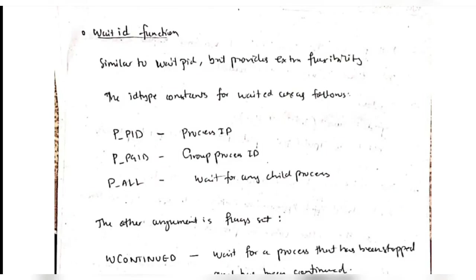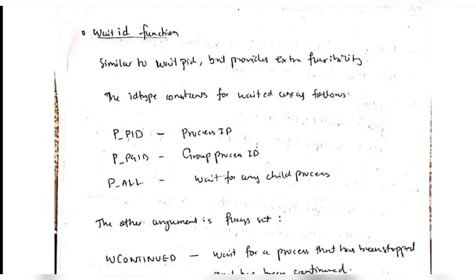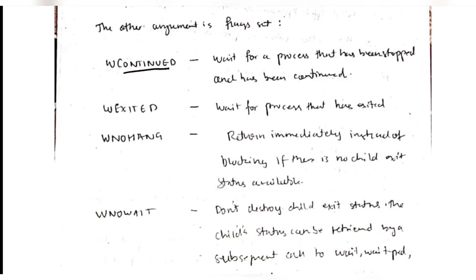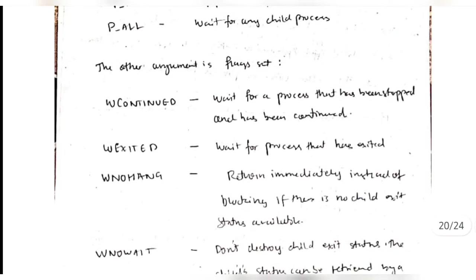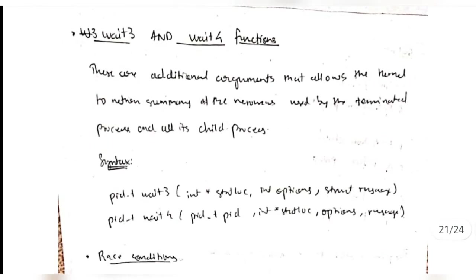The 'waitid' function is similar to waitpid but has some extra functions. The syntax uses three ID types: pid, pgid, and P_ALL for waiting on any child process. Other arguments include WCONTINUED, WEXITED, WNOHANG, WNOWAIT, and so on. The 'wait3' and 'wait4' functions are for returning a summary of what resources were used - not for the waiting purpose but for the status of what resources the function consumed.